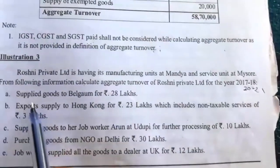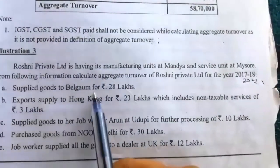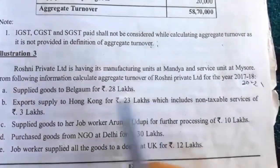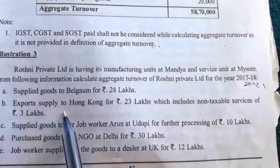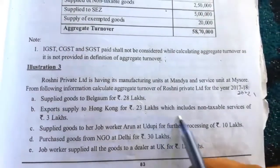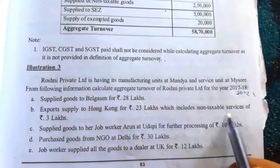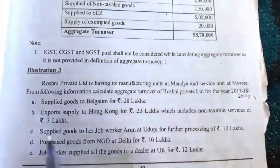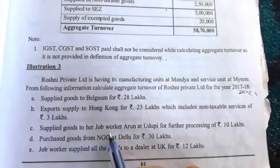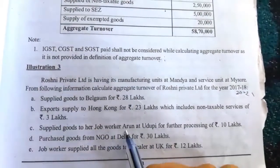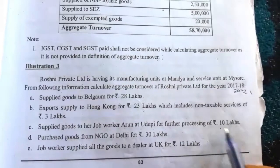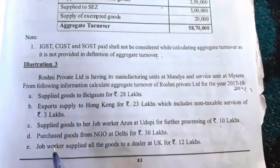First: supplied goods to Belgium for Rs. 28 lakh. Export supply to Hong Kong for Rs. 23 lakh, which includes non-taxable service of Rs. 3 lakh. Supplied goods to her job worker Arun at Udupi for further processing, Rs. 10 lakh.